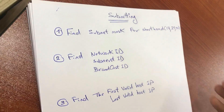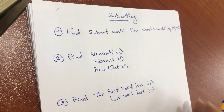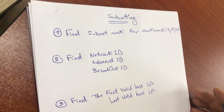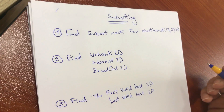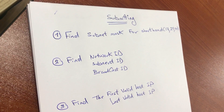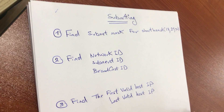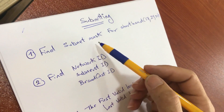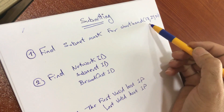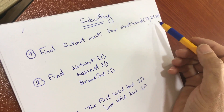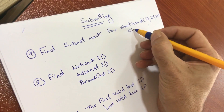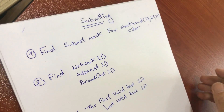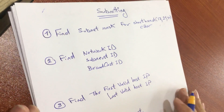Hello everyone. In this video I will talk about an easy way for subnetting. I have collected four types of questions about subnetting and I will show you an easy way to solve these questions. The first one is: find the subnet mask for a shorthand — /17, /25, /30 — sometimes called CIDR. So let's get started.